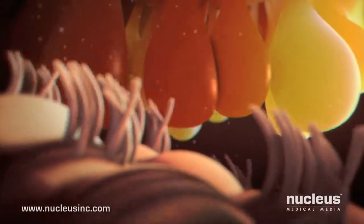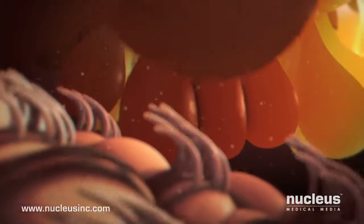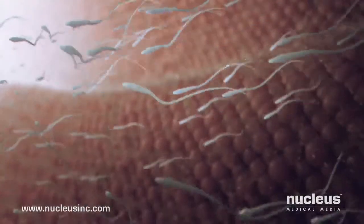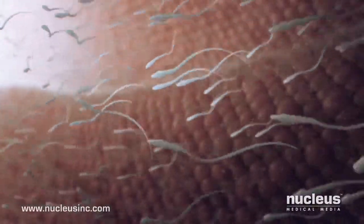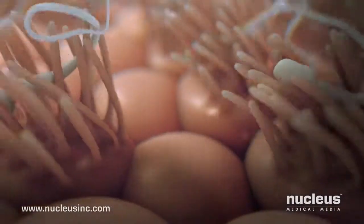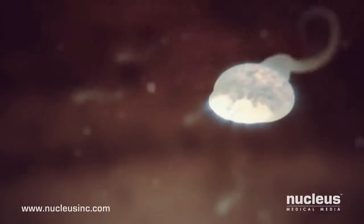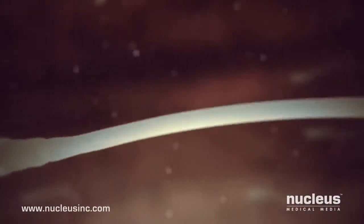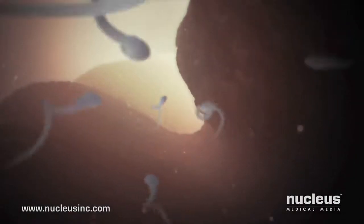Inside the fallopian tube, tiny cilia push the egg toward the uterus. To continue, the sperm must surge against this motion to reach the egg. Some sperm get trapped in the cilia and die. During this part of the journey, chemicals in the reproductive tract cause the membranes covering the heads of the sperm to change. As a result, the sperm become hyperactive, swimming harder and faster toward their destination.